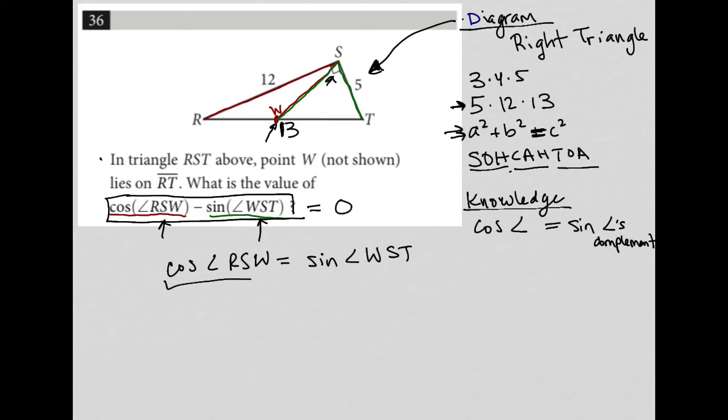Because if the cosine of angle RSW was, let's say, three-fourths, then that would mean that the sine of angle WST would also be three-fourths. And then the question would just be saying, what's the solution to three-fourths minus three-fourths?